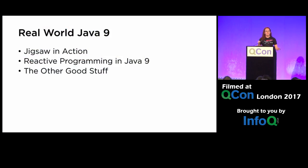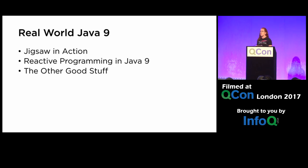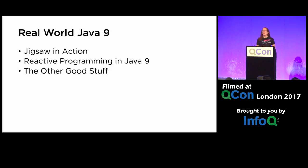I'm going to do a little bit about Jigsaw in action, even though I promised I wasn't going to do anything about Jigsaw. I'm going to spend quite a bit of time looking at reactive programming in Java 9, because the reactive APIs are built into Java the language. And then I'm going to spend some time looking at some of the other Java 9 features that we as developers are probably going to find reasonably interesting.